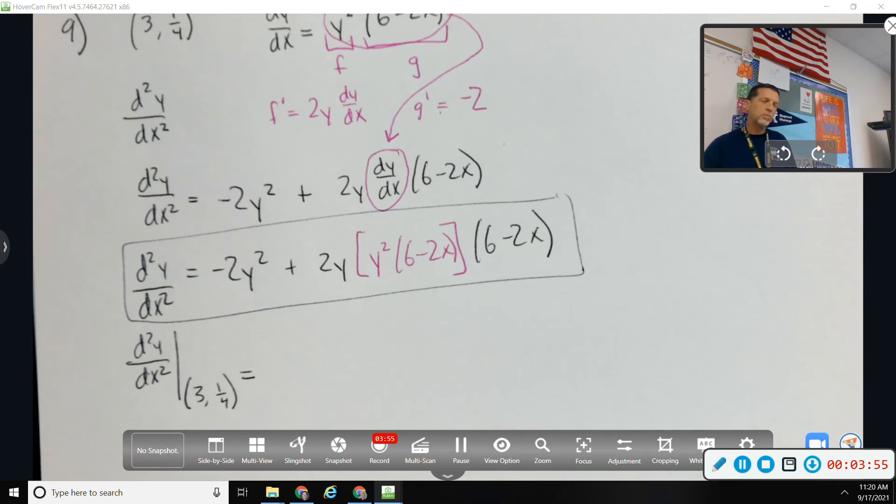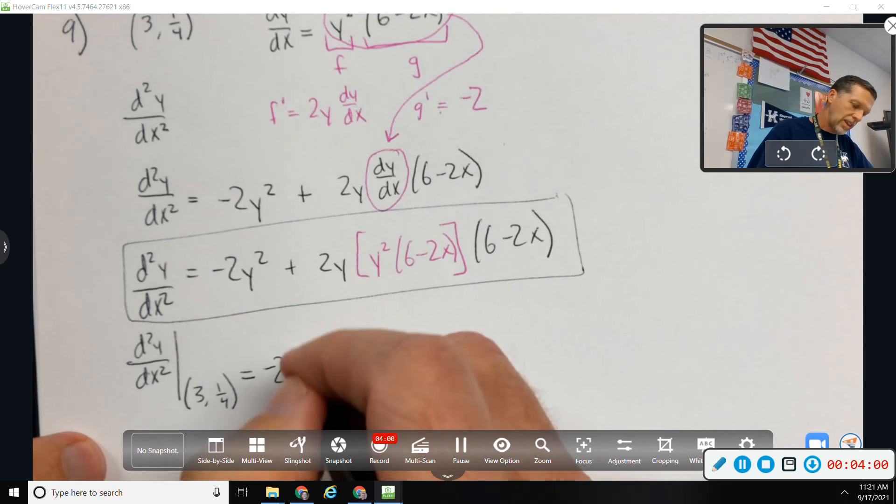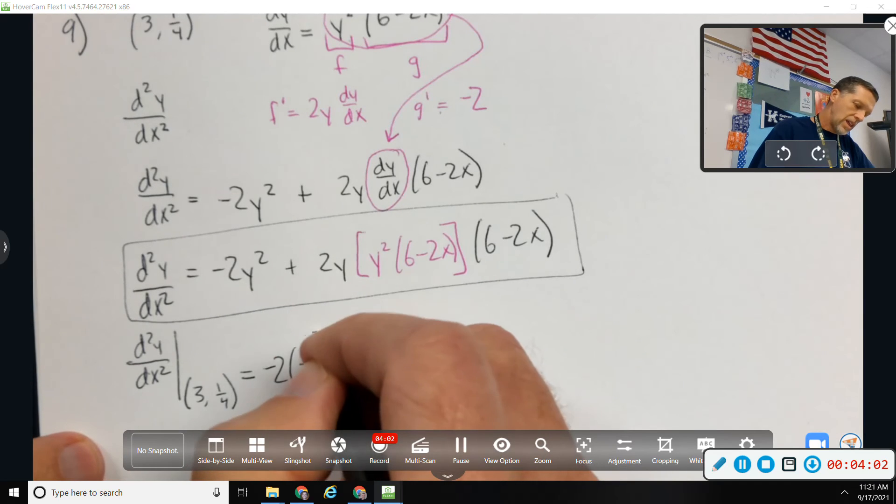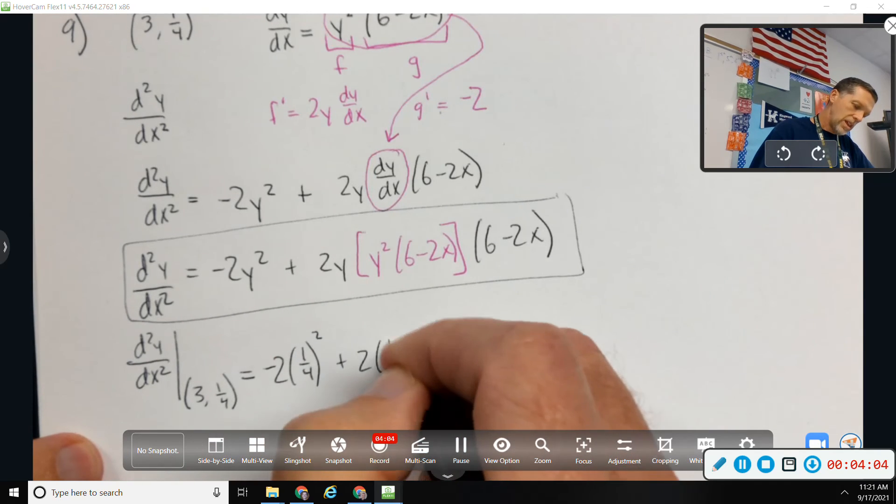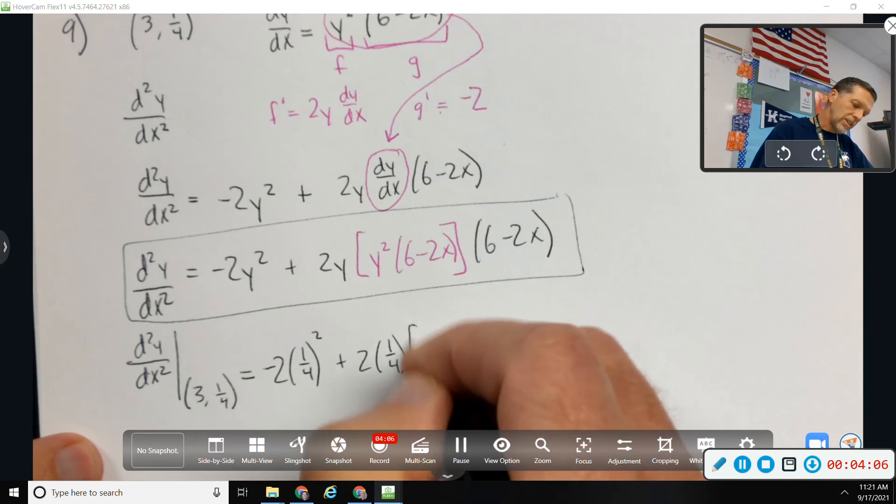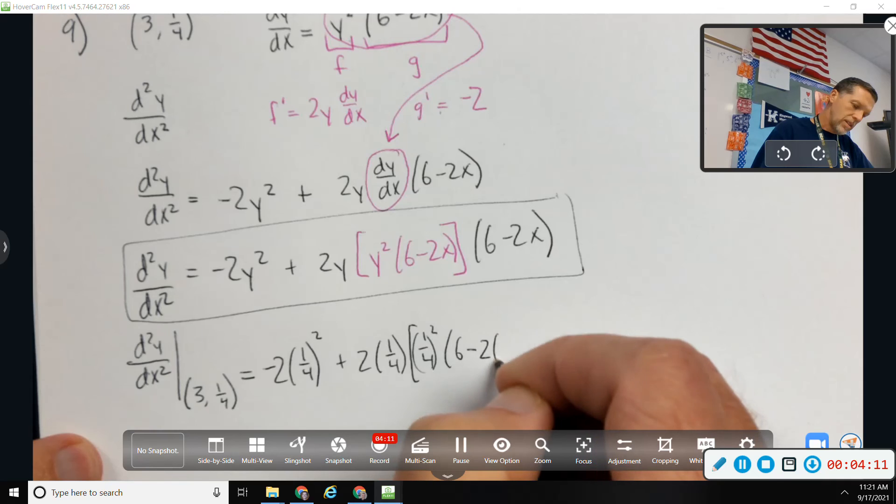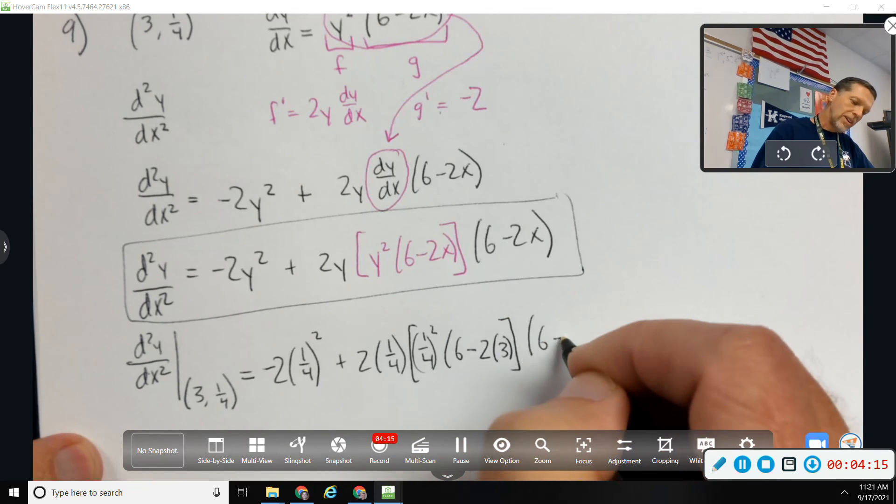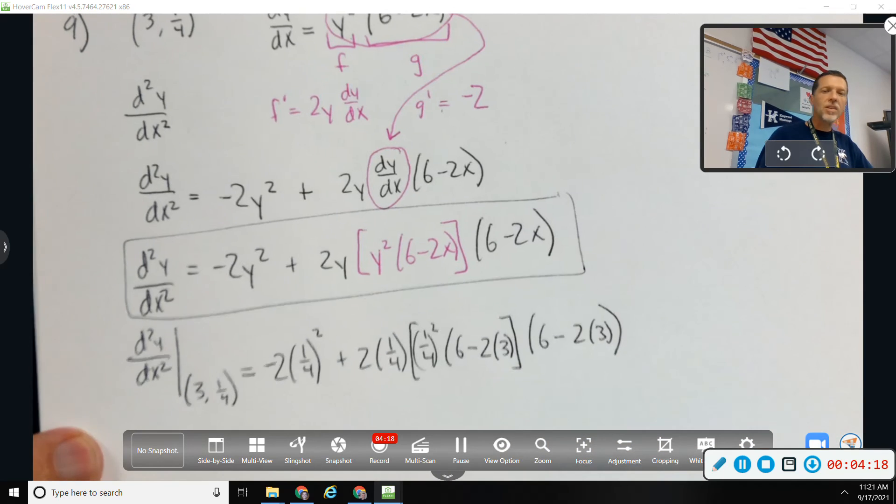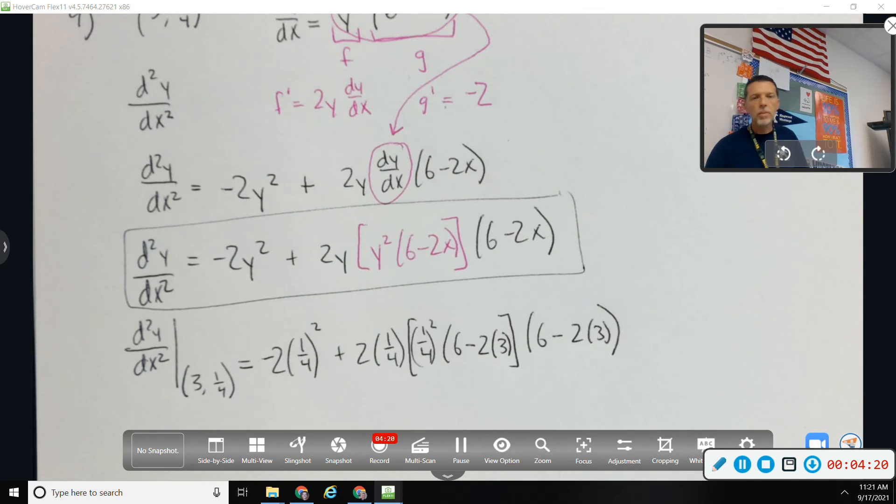So now all I need to do is plug in 3 for x, 1 fourth for y. And I'm not going to simplify anything. All right, I'm just going to leave it all kind of as is. It's going to look terrible, but... Oh, you know what? I said I was going to leave it all as is, but something kind of nice happens. I mean, you can leave that. That's completely okay to leave that. That's correct.